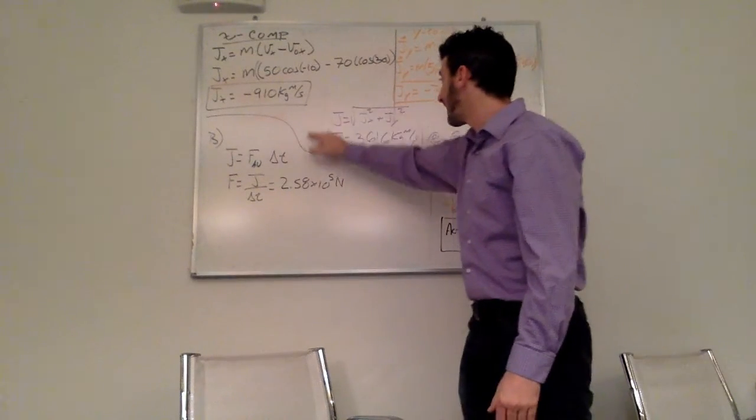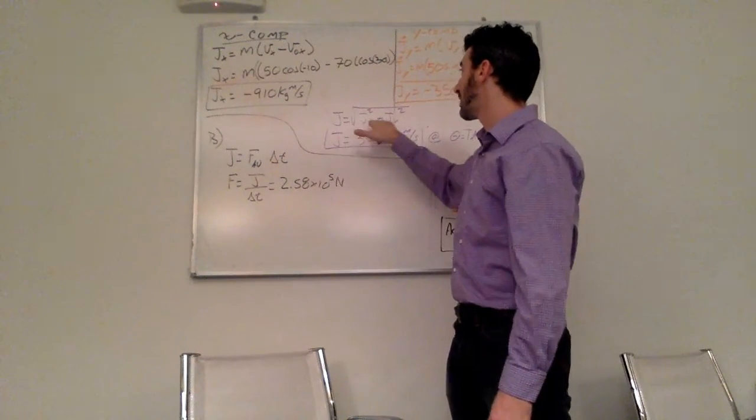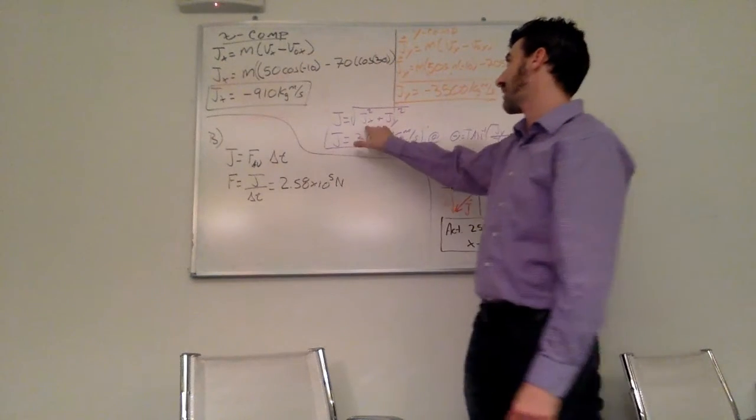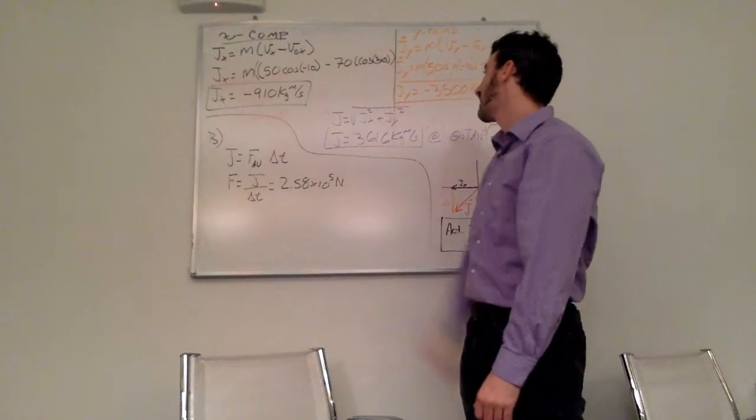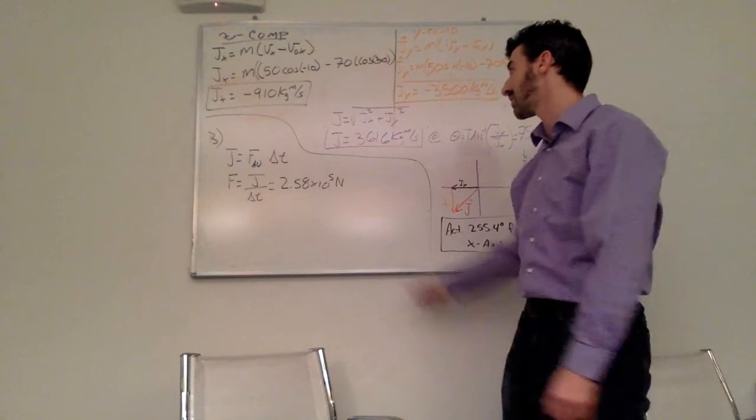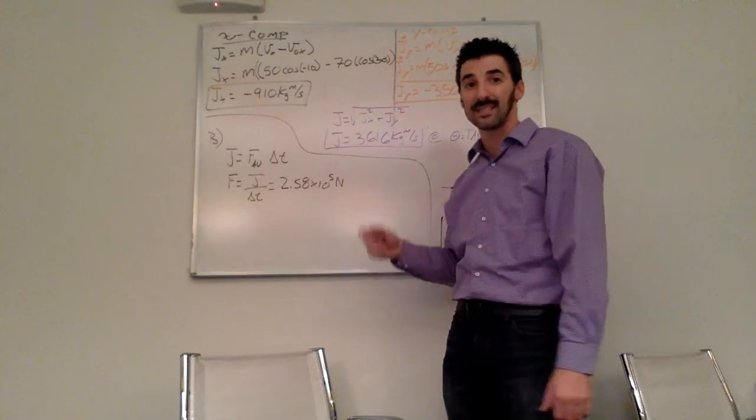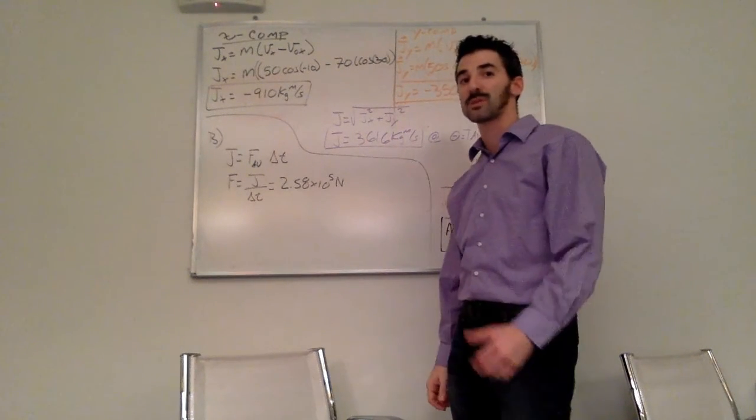To find the net impulse, I just use Pythagorean theorem and I get an impulse of approximately 3,600 or exactly 3,616 kilograms times meters per second.